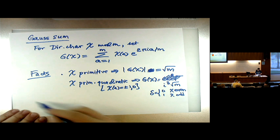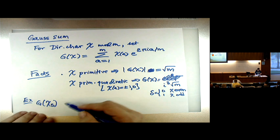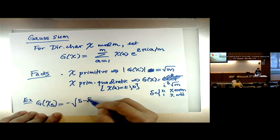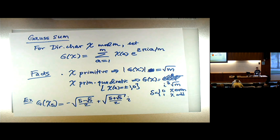As another example: the Gauss sum of the character mod 5 with values 1, i, −1, −i (which is not quadratic) turns out to be −(√(5 − √5)/2) + (√(5 + √5)/2)·i. Not the friendliest number in the world, but there it is as an explicit example.